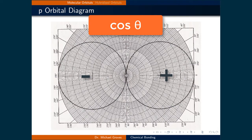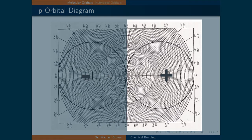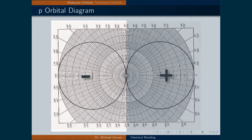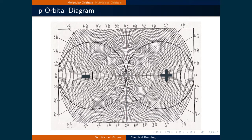Prior to examining the p-based molecular orbitals, let's briefly return to the shape of the p orbital. When sketching the shape, we can plot a cosine theta term on polar paper to get the familiar dumbbell shape. The cosine of angles between 0 and 90 degrees gives a positive number, so that region is denoted with a plus sign. The cosine of angles between 90 and 180 degrees are negative, so that region is denoted with a minus sign. We can think of these plus and minus signs as the wave being in opposite phases. This has ramifications when two p orbitals from different atoms overlap, as it determines if they constructively or destructively interfere.